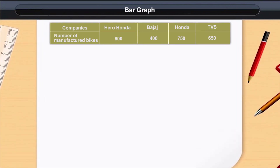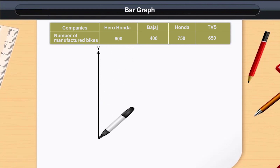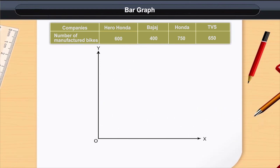Bar Graph. Take a look at this table. It shows information related to different companies and the number of bikes manufactured by them. Let's use a bar graph to denote the given data. A bar graph or bar diagram is helpful in denoting data in visual form.